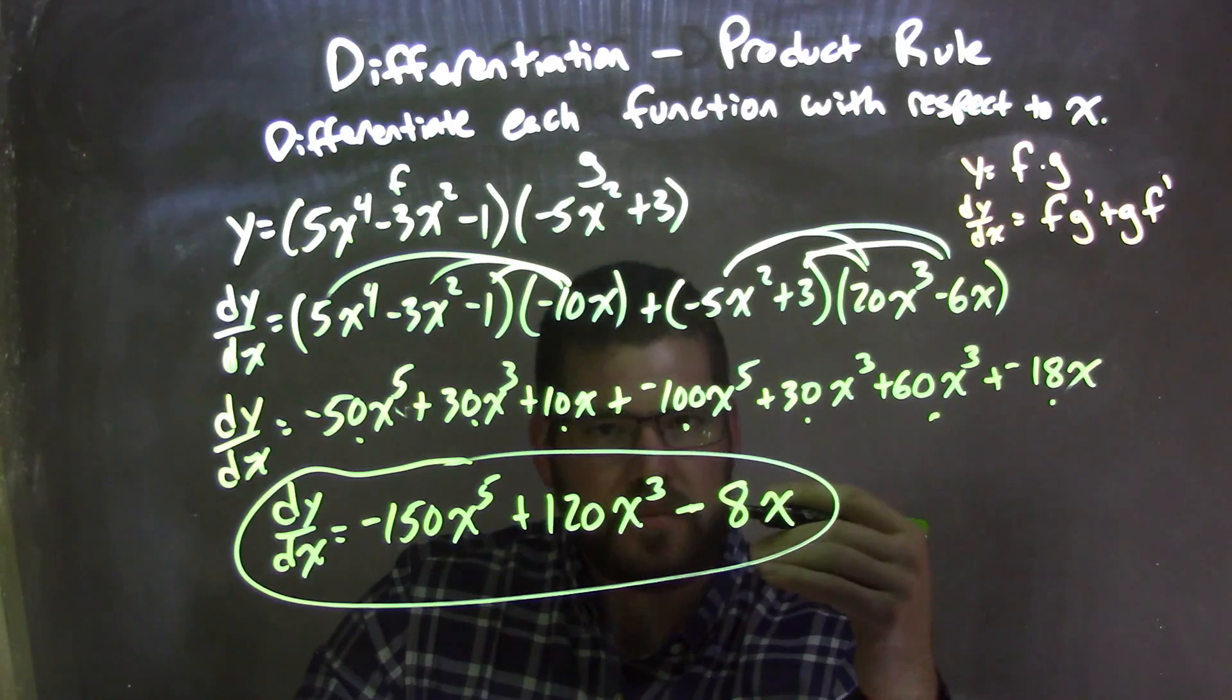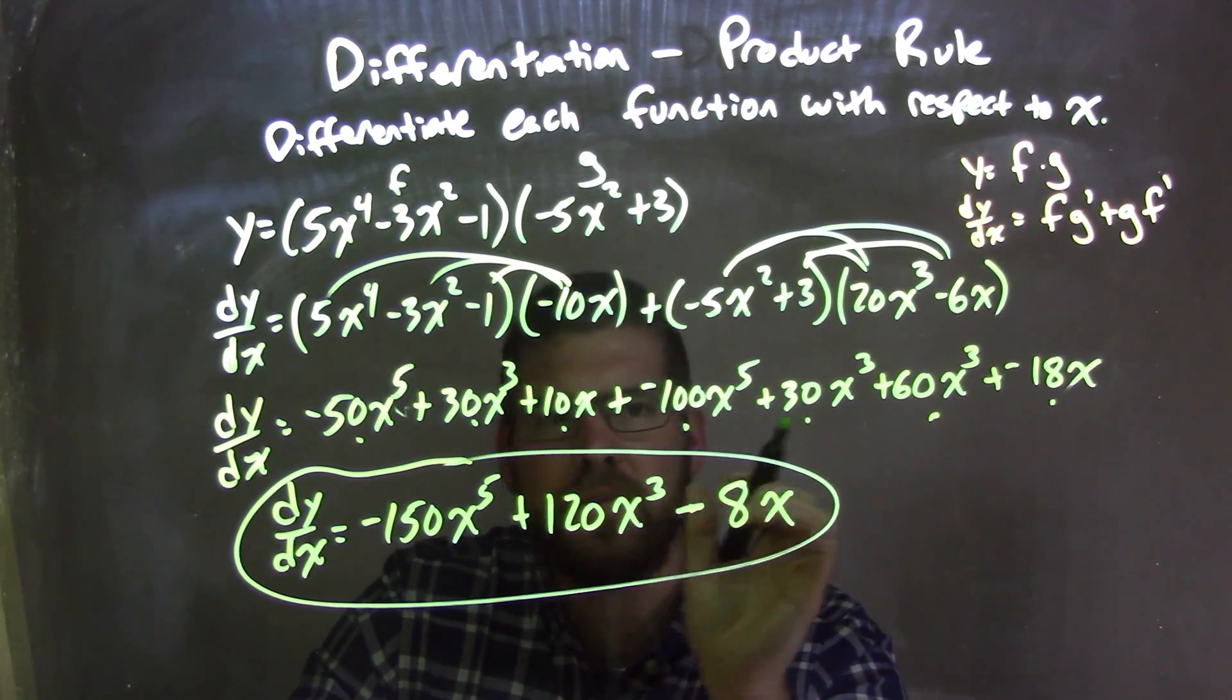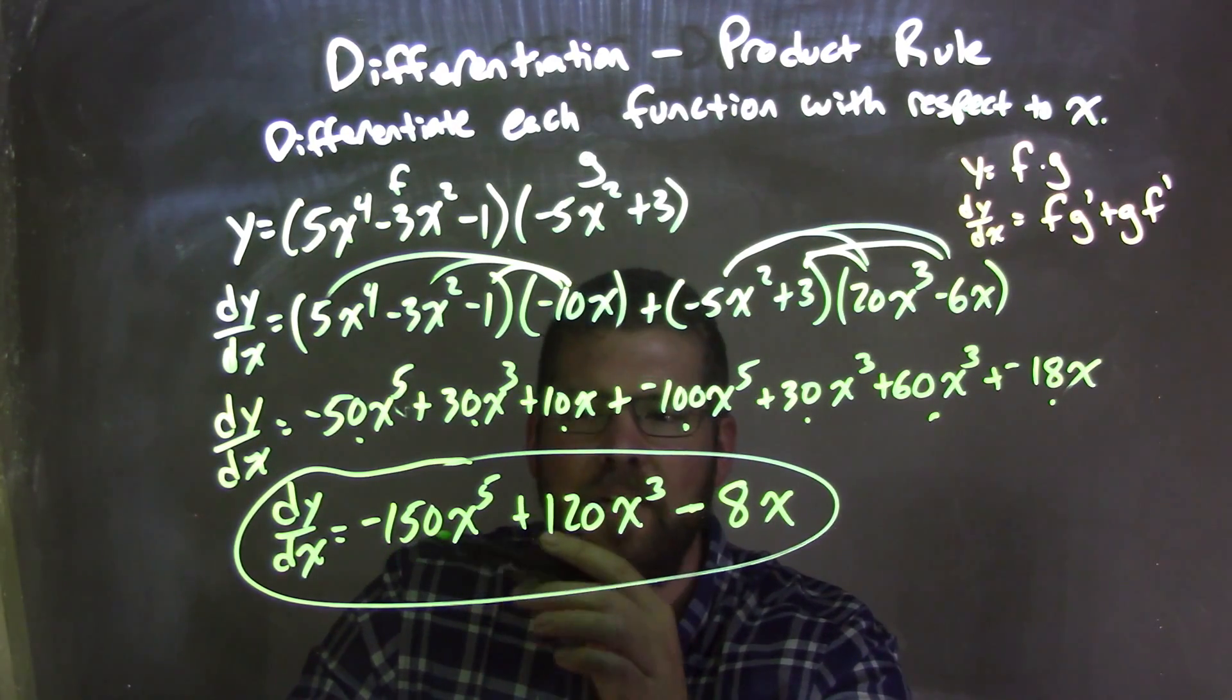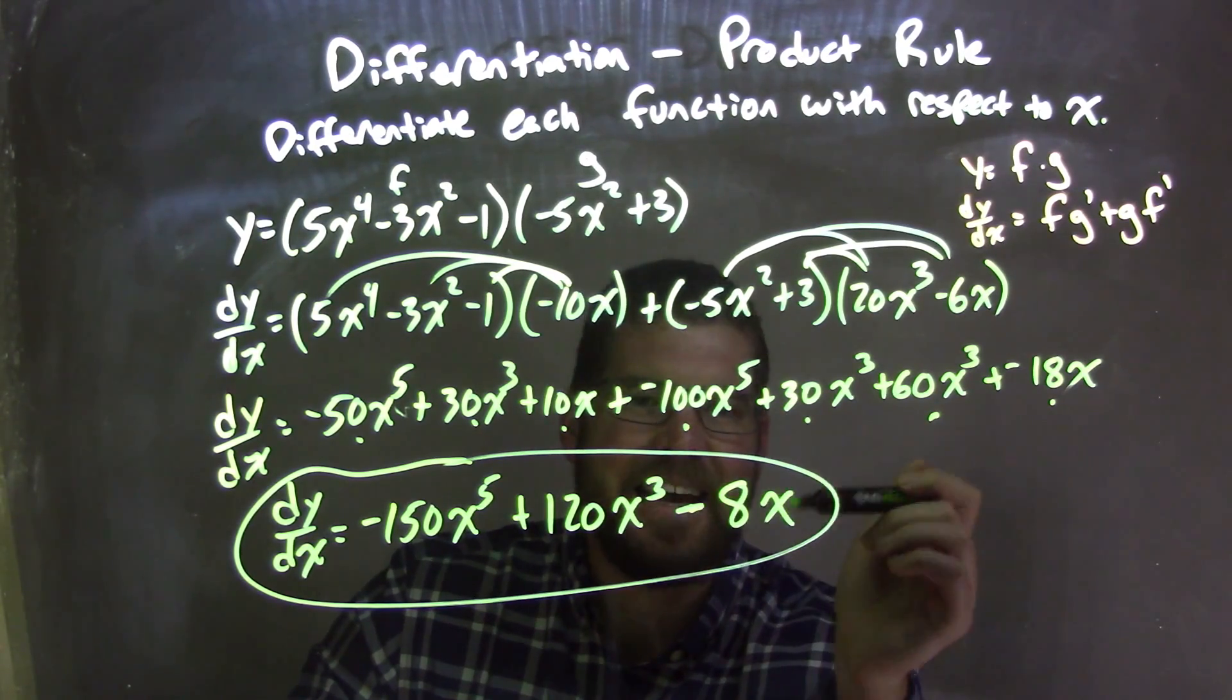From there, I simplified it again, having my highest degrees come first, and we combine our like terms, giving me my final answer: dy dx equals negative 150x to the 5th plus 120x to the 3rd minus 8x.